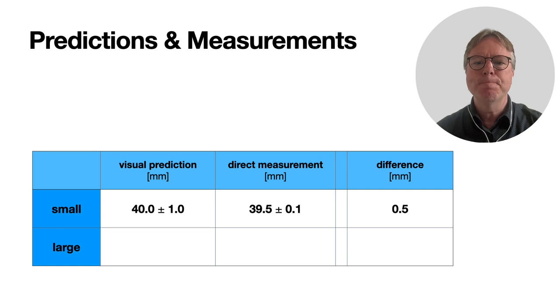The direct measurement with the caliper was 39.5 ± 0.1 millimeters for the diameter, so that's pretty precise measurements. The formula for this stereo situation from two views predicts 40 ± 1 millimeter. It's a little bit less precise than the caliper measurements, but the difference, the accuracy, is half a millimeter, which is not bad for normal cameras. I'm using an iPhone camera.